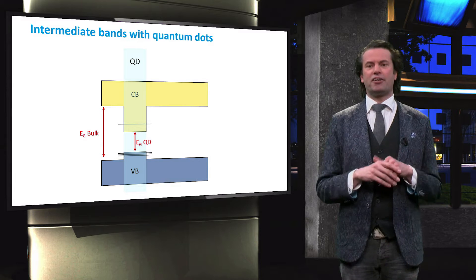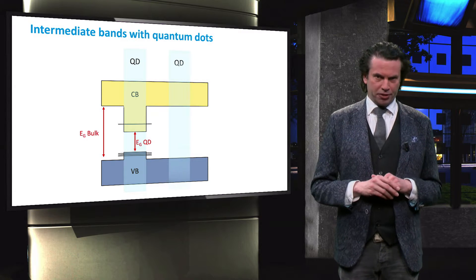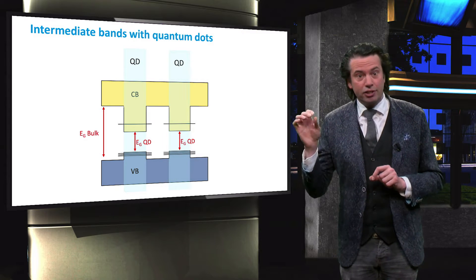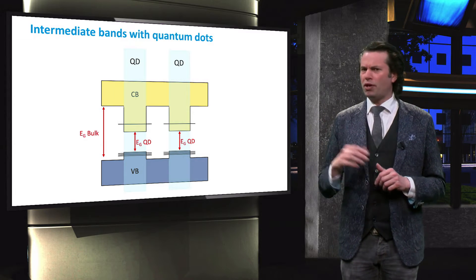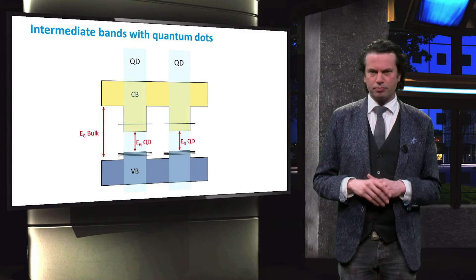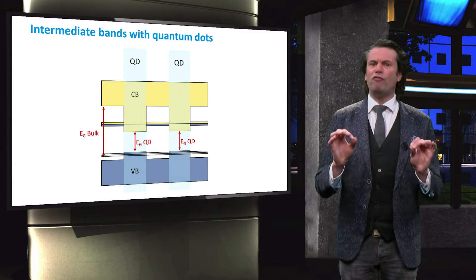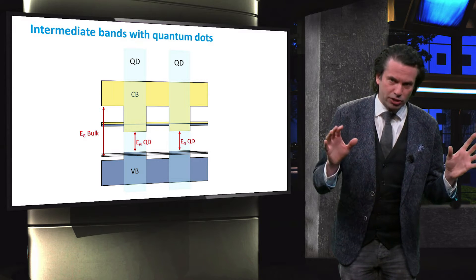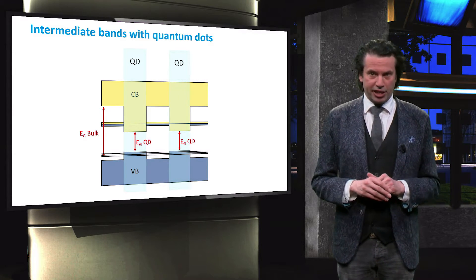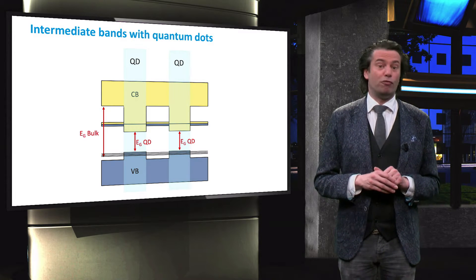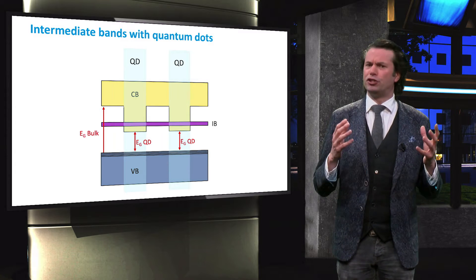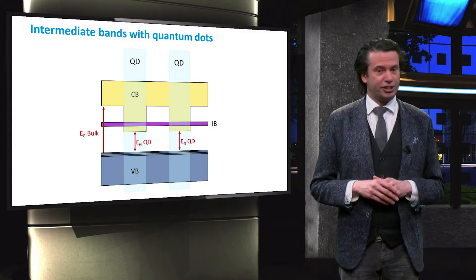Let's extend the band diagram of the bulk material and position a second quantum dot near the first one. This quantum dot will also create energy states in the bandgap. If enough quantum dots are integrated in the material, continuous bands of allowed energy states are formed in the bandgap of the bulk material. As a result, the band structure of the semiconductor is effectively changed.